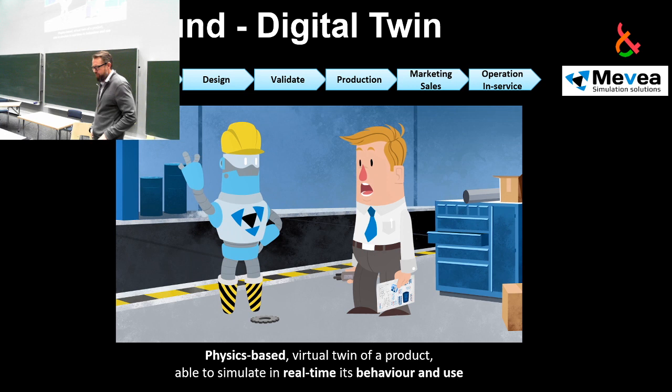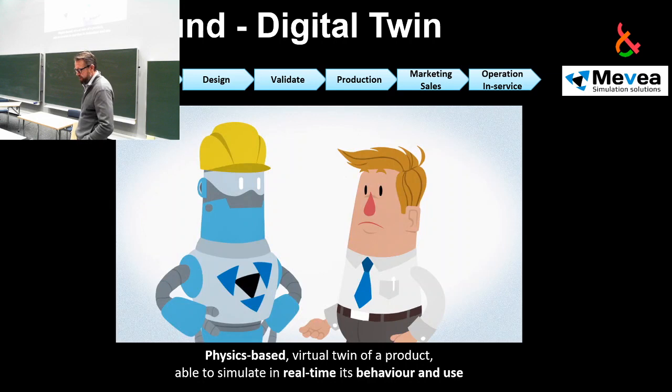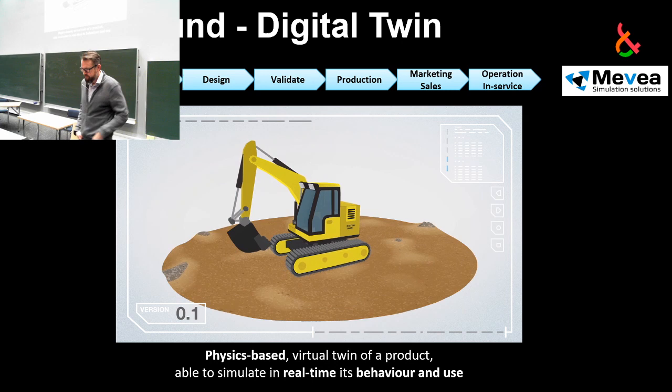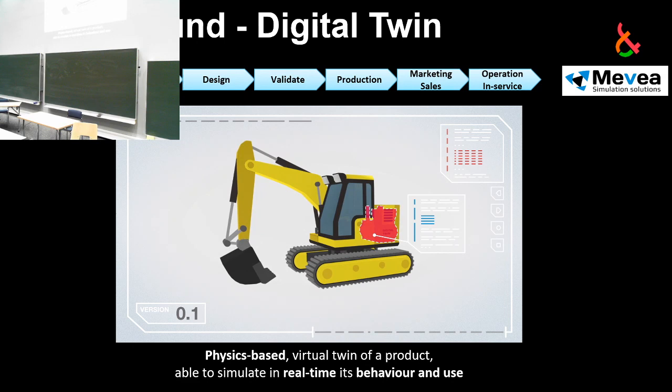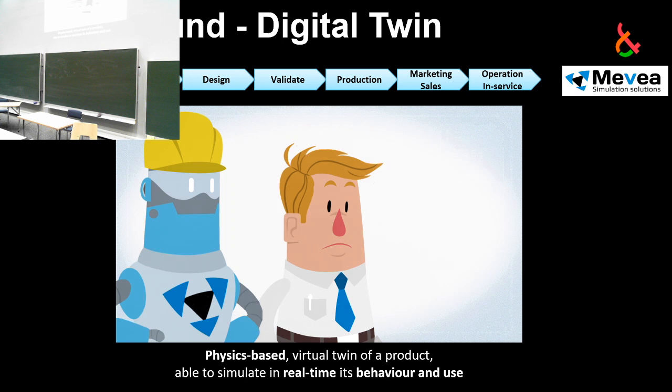Nobody wants to be known as the manufacturer of poor and unreliable machinery. Movea combines all plans for your machine into a single virtual model called a digital twin. This includes all components necessary to build your machine, such as the interface to the control system. The digital twin is a virtual, physics-based representation of your machine capable of simulating its behavior in real time.